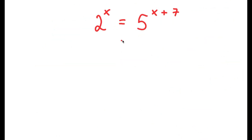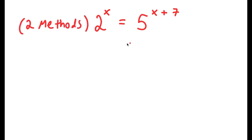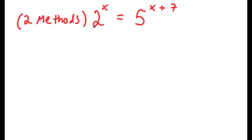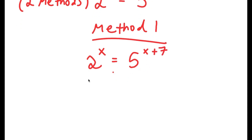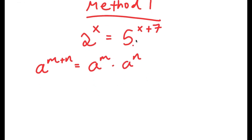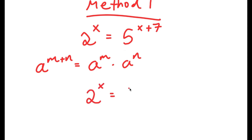In this problem, I have 2 to the power of x is equal to 5 to the power of x plus 7. There are actually two methods to solve this. For Method 1, I'll rewrite 5 to the power of x plus 7 using the exponent rule a to the power of m plus n equals a to the power of m times a to the power of n, giving 5 to the power of x times 5 to the power of 7.